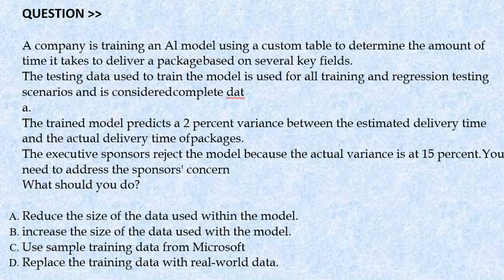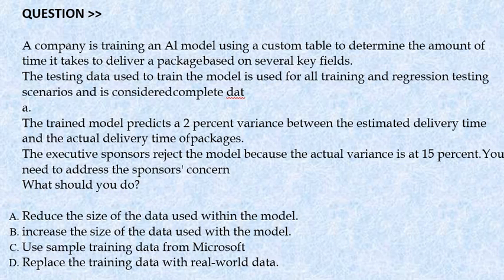Question: A company is training an AI model using a custom table to determine the amount of time it takes to deliver a package based on several key fields. The testing data used to train the model is used for all training and regression testing scenarios and is considered complete data. The trained model predicts a two percent variance between the estimated delivery time and the actual delivery time of packages.